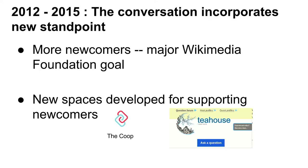Maybe we should also value newcomers having a good experience and design our system around that. So Wikipedia is still a firehose — that didn't change. Bad edits still need to be reverted, and we still want to minimize effort wasted on quality control. But our standpoint has now been extended to realize that we need to socialize and train newcomers. Between when this study was published and 2015, conversations around Wikipedia incorporated this new standpoint. More newcomers and solving the retention issue became a major Wikimedia Foundation goal. Spaces were explicitly developed to help newcomers, such as the co-op, a mentoring space, and the tea house, the question-and-answer space.